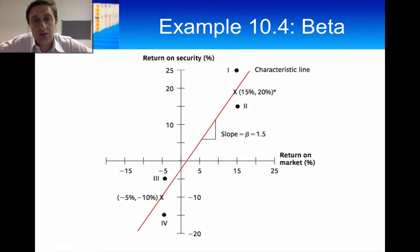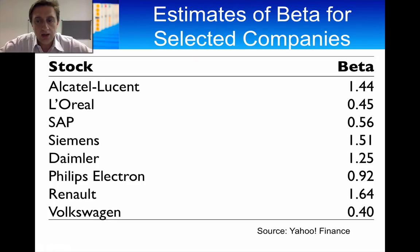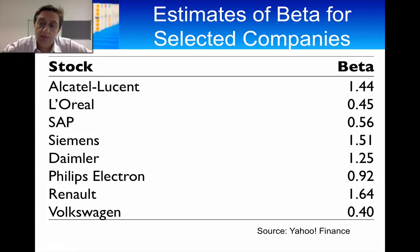Most assets in the market have a positive beta: when the market return goes up, the company's return goes up; when the market goes down, the company's return is negative. Looking at betas of different European companies, there is quite a lot of variation in beta. The lowest-risk company shown is L'Oreal, and the highest-risk company is Renault, so there is quite a lot of variation there.